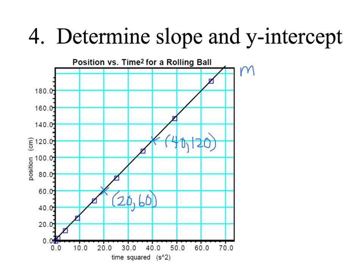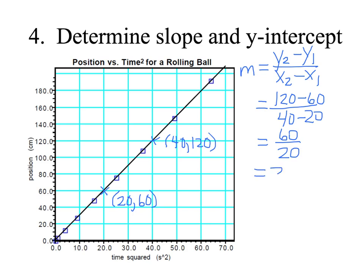So probably a review for you that slope is equal to the change in the Y values over the change in the X values. So if we take the two particular points we're looking at, 120 minus 60 over 40 minus 20, which is equal to 60 over 20, and that reduces to 3.